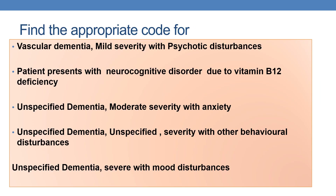Please find the appropriate code for the following scenarios and comment below. First: vascular dementia, mild severity with psychotic disturbances. Second: patient presents with neurocognitive disorder due to vitamin B12 deficiency. Third: unspecified dementia, moderate severity with anxiety. Fourth: unspecified dementia, unspecified severity with other behavioral disturbances. Fifth: unspecified dementia severe with mood disturbances. Thank you for watching — please subscribe for further videos on medical coding and CPC training.